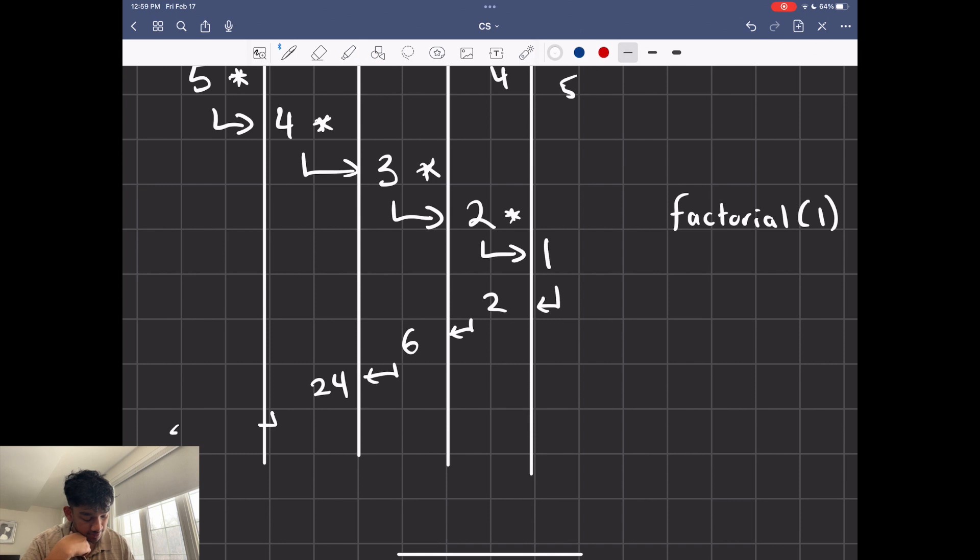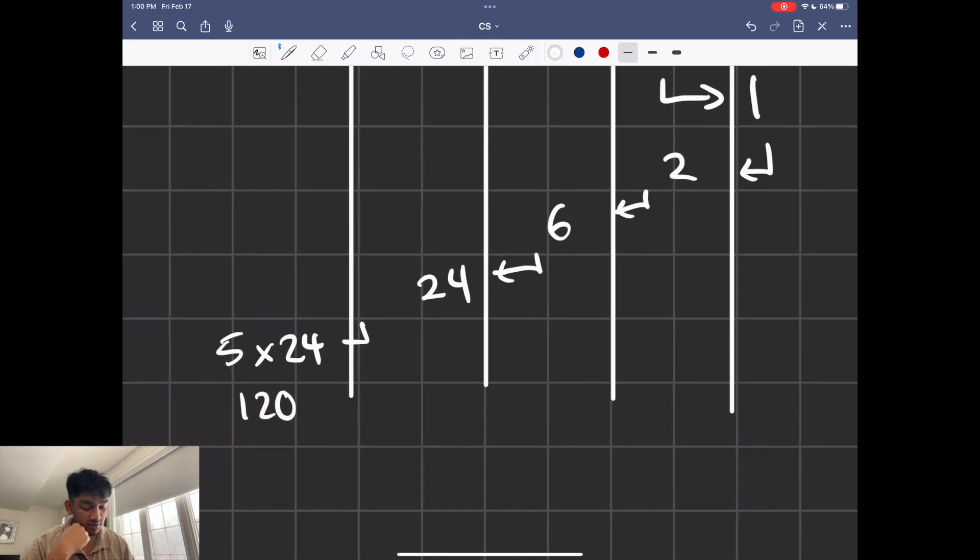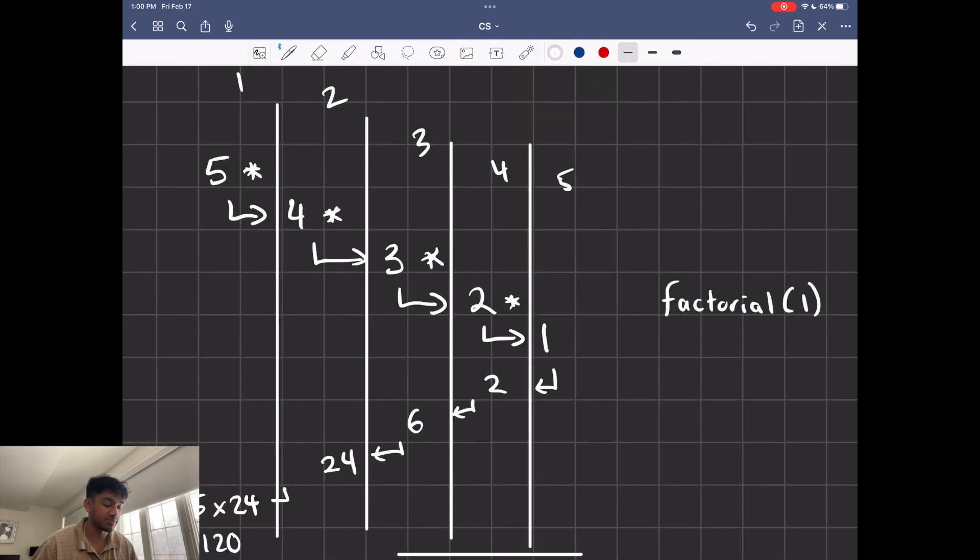And then finally, over here, we're going to have 5 times 24, which is 120. So we do all these calls, and we can only do the computation at the end after the recursive call. Although it's still fast because our computer is really fast, we can make this a lot more optimal.